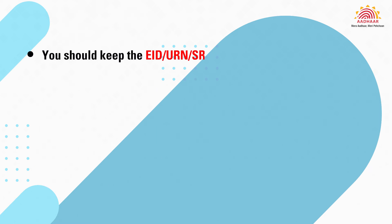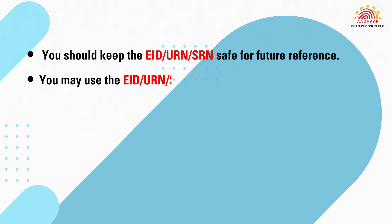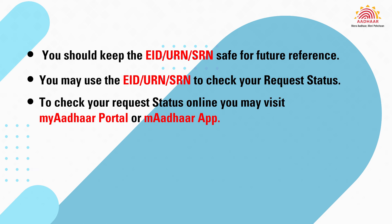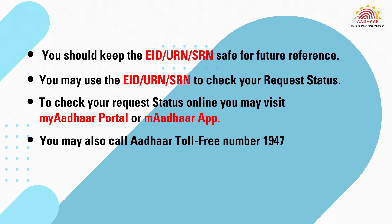You should keep the EID, URN, and SRN safe for future reference. You may use the EID, URN, or SRN to check your request status. To check your request status online, you may visit the MyAadhaar Portal or Aadhaar App. You may also call the Aadhaar toll-free number 1947.